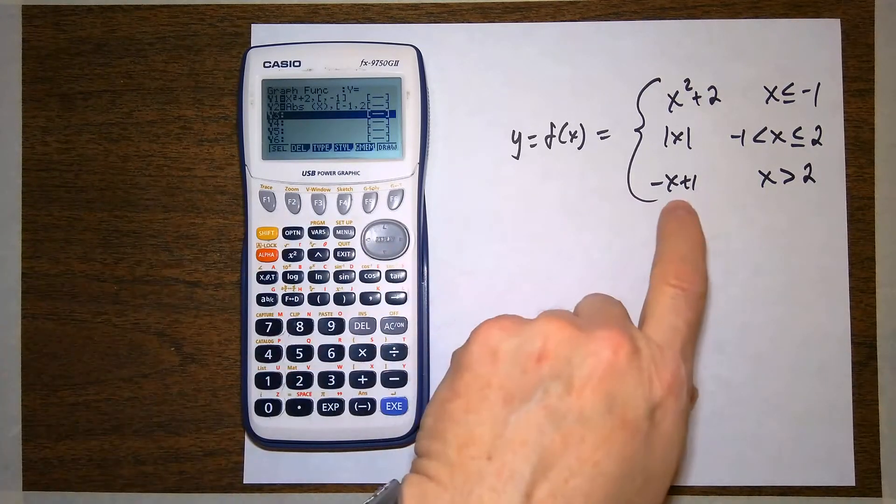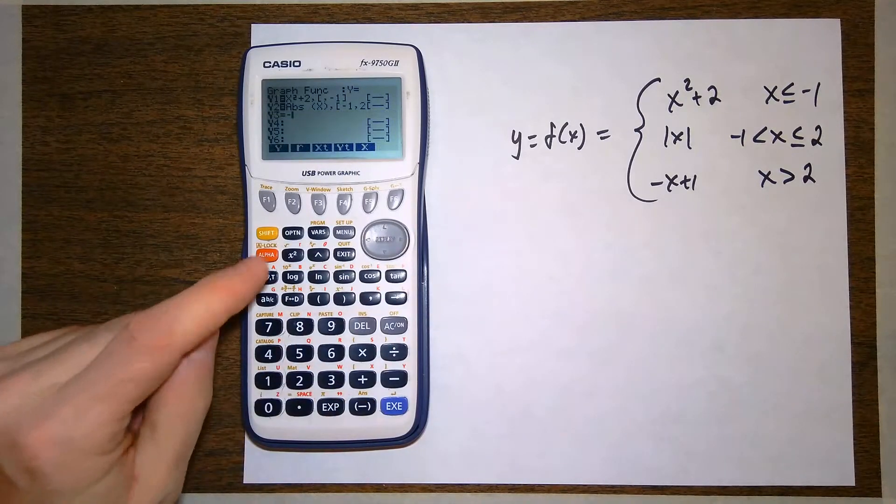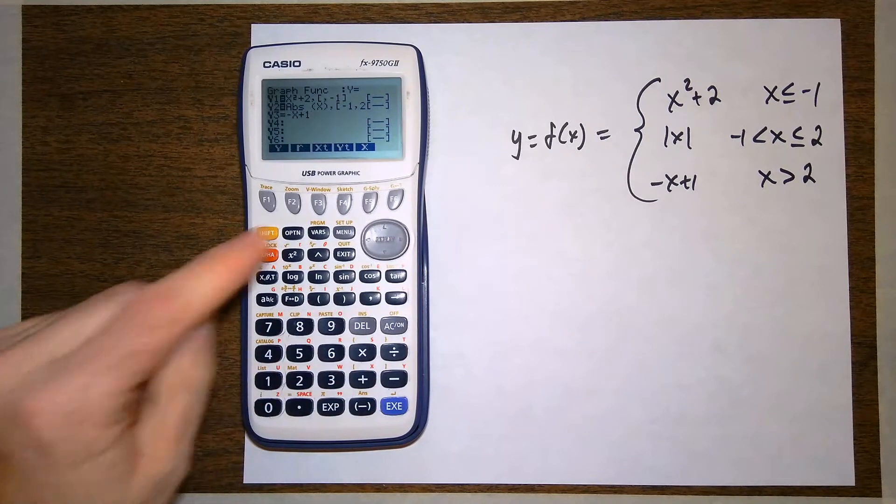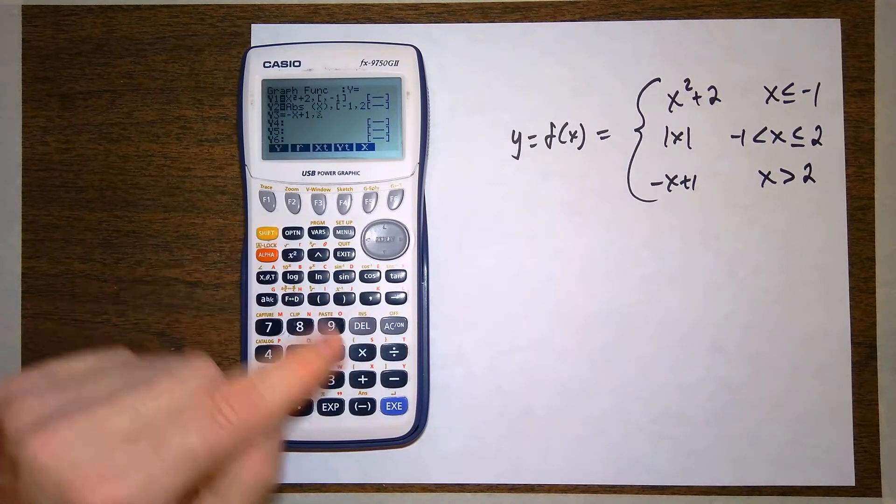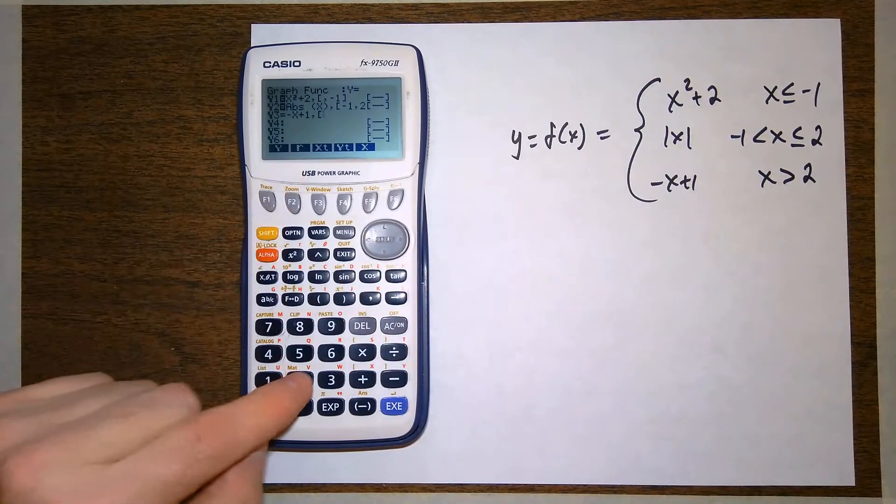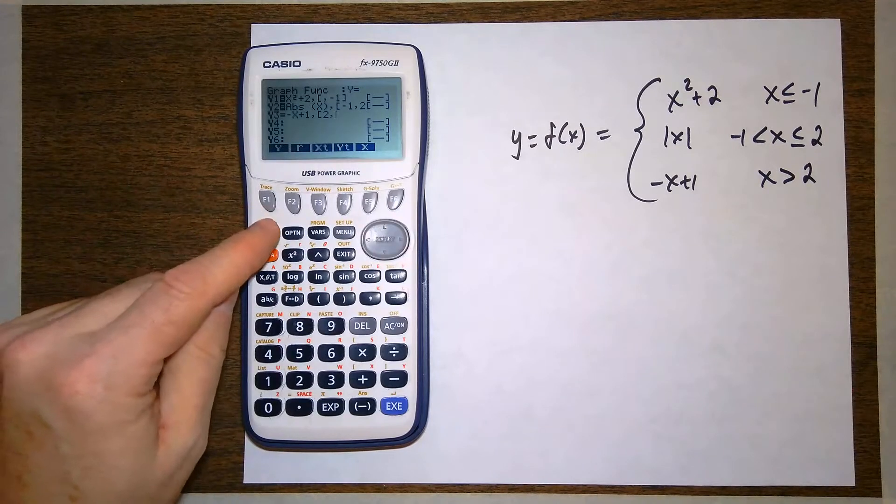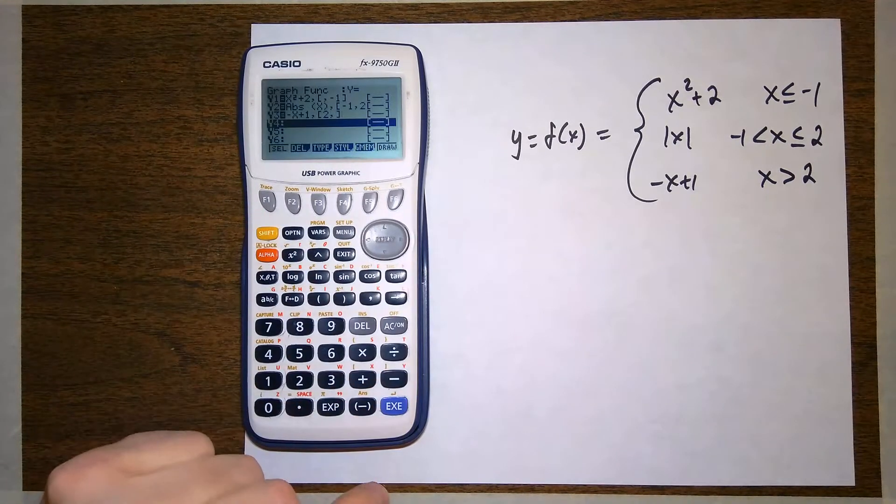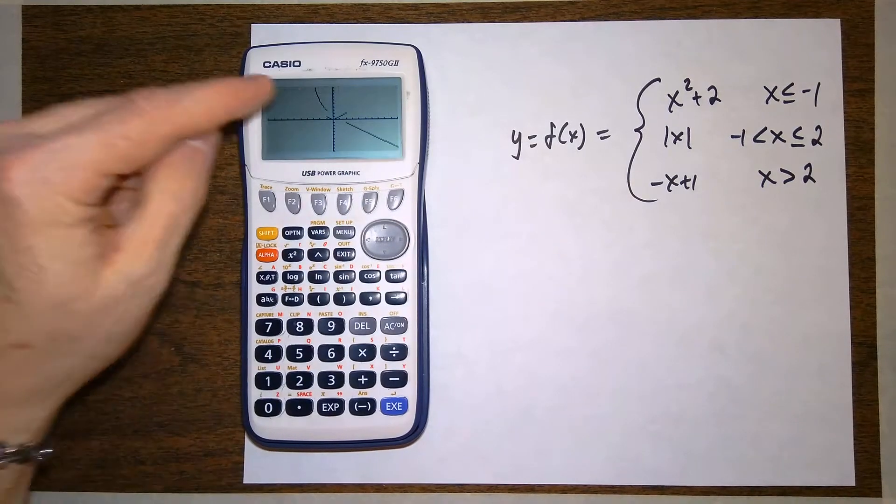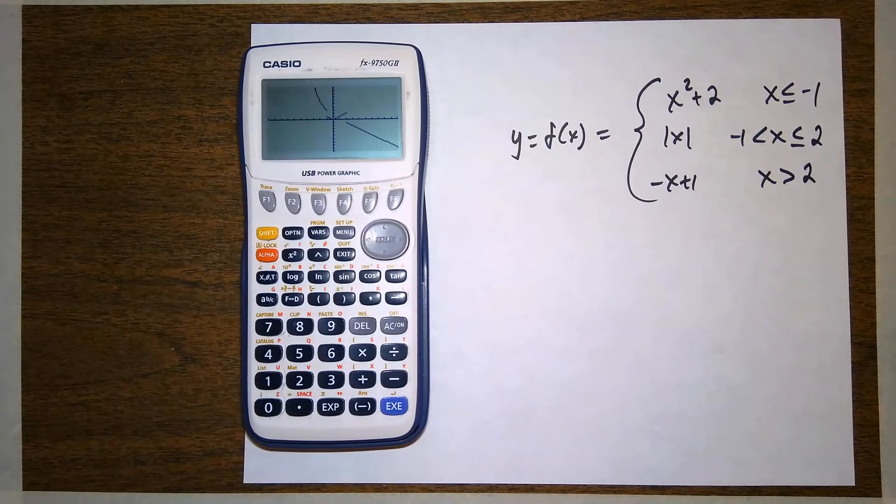And then the third piece of this function is the line negative x plus 1. So negative x plus 1, and again comma, open the parentheses, and I want to go from 2 to infinity. So close, and here it is, and f6 to draw the function. And here we have the parabola piece, the absolute value piece in the middle, and then the line at the end.